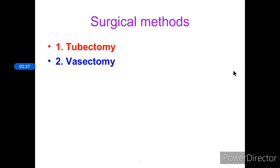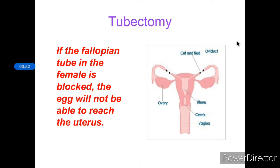The next method is surgical methods — tubectomy and vasectomy. In tubectomy, the fallopian tube in the female is blocked. The ovary releases an egg every month, which is carried through the fallopian tube. If this tube is blocked, the sperm and egg won't meet each other, so fertilization won't take place. When the fallopian tube is blocked, the egg will not be able to reach the uterus — that is tubectomy.